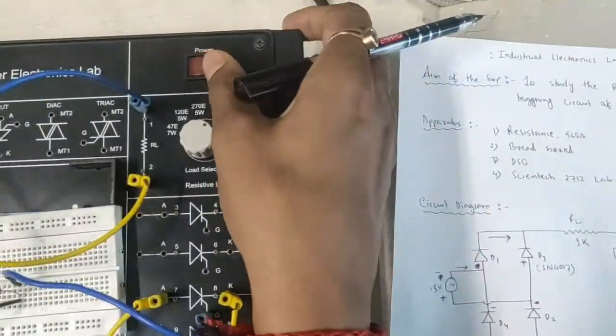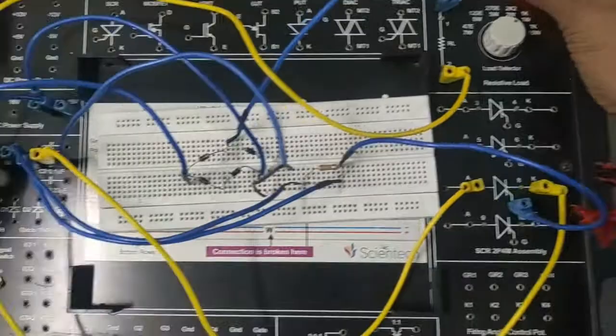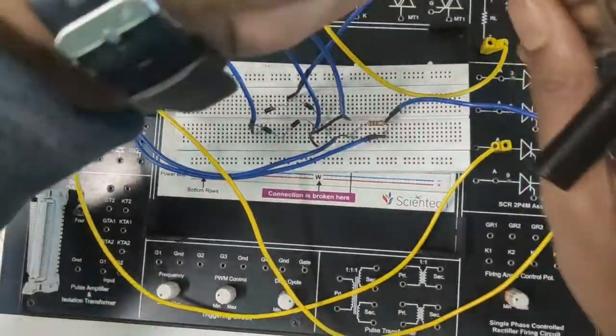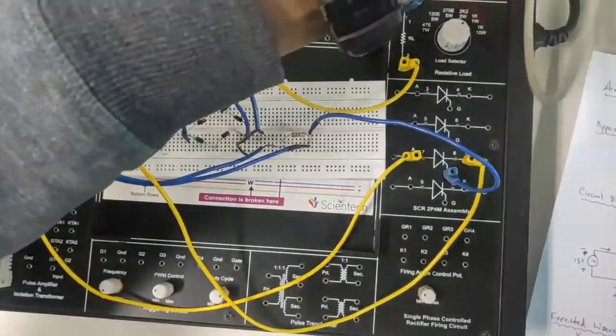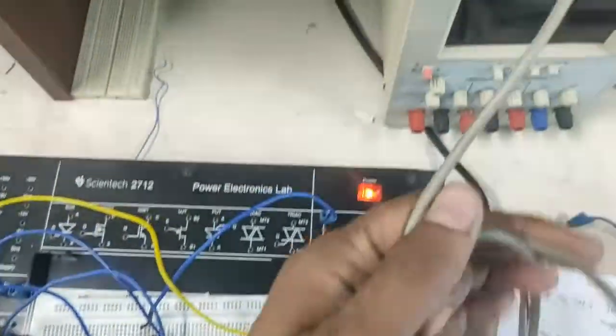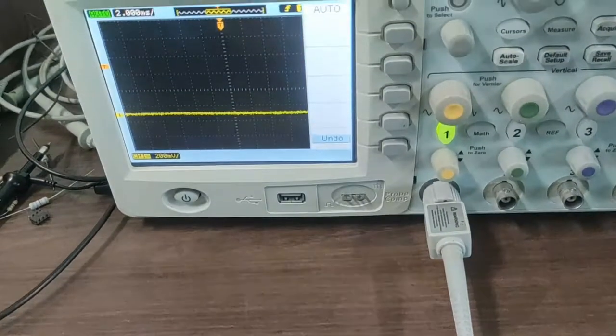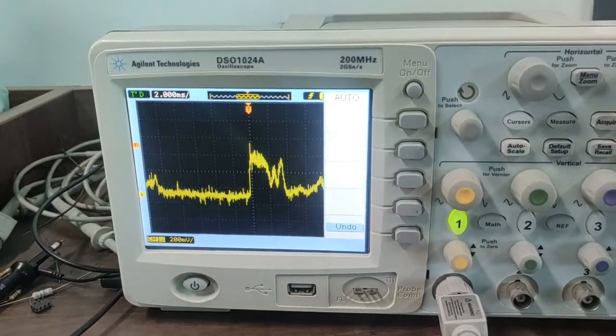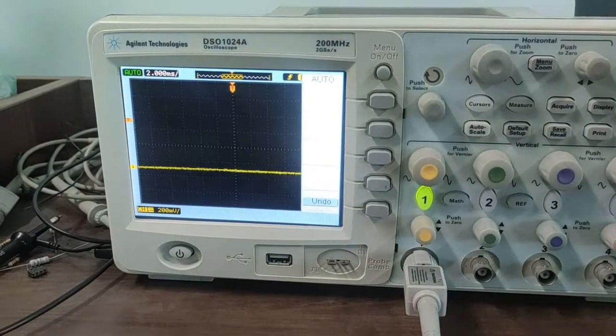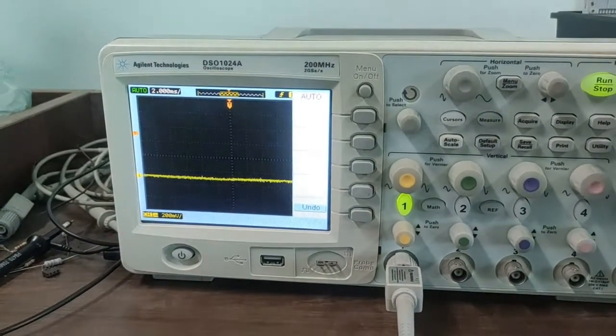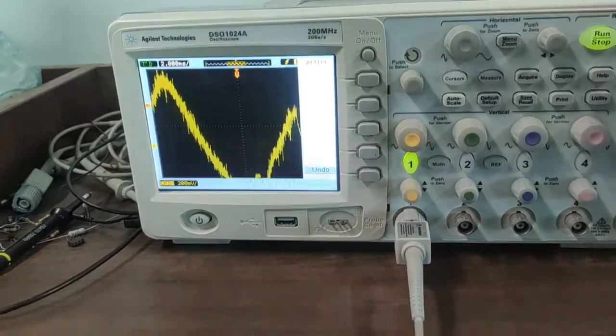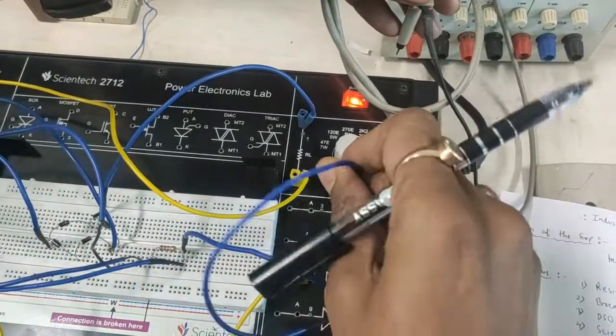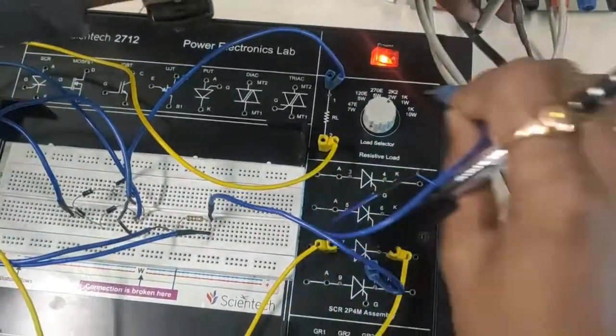Now, I am turning on this supply. See here, this is DSO. This one is DSO probe. Now, DSO probe is connected to, this DSO probe is connected across the load resistance.